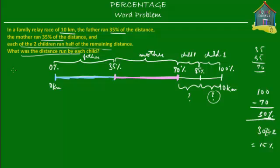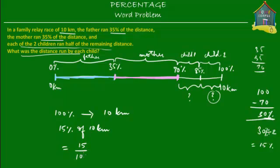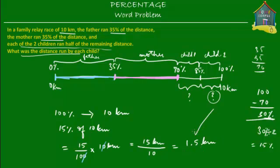We know that 100% equals 10 kilometers, and each child ran 15%. So we need to find what 15% of 10 kilometers is. 15% means 15 over 100, times 10 kilometers. The zeros cancel out, giving 15 kilometers divided by 10, which equals 1.5 kilometers. So each child ran 1.5 kilometers.